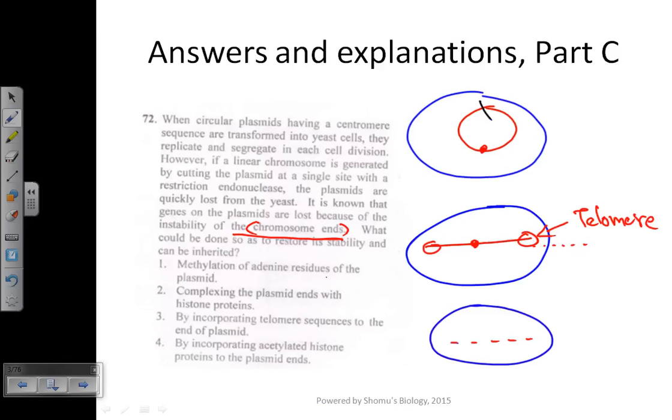Methylation plays a role in preventing degradation by restriction endonuclease enzymes, but it will not protect the ends of chromosomes from exonucleases. So this is not true.